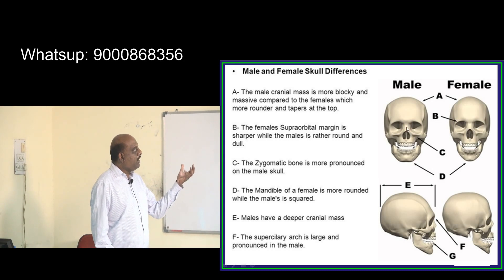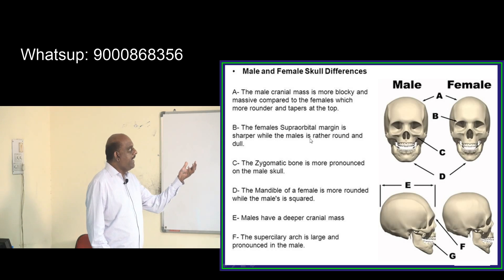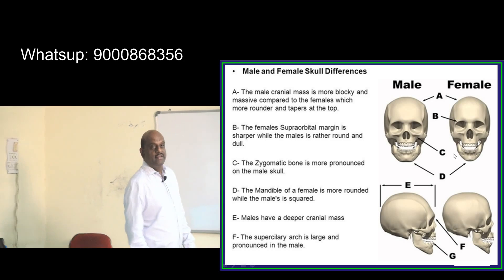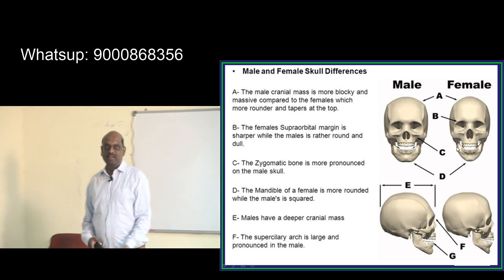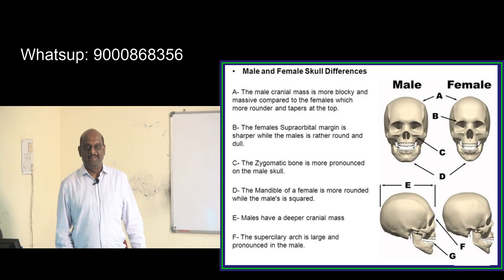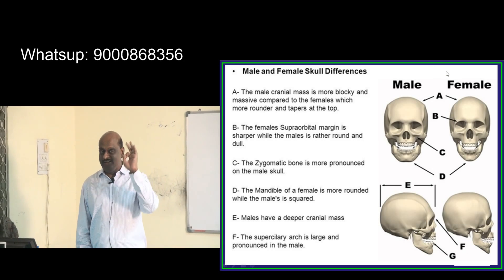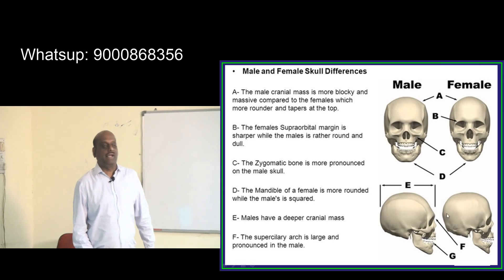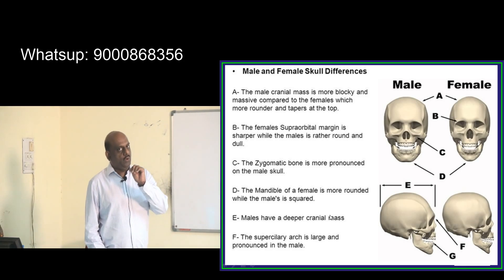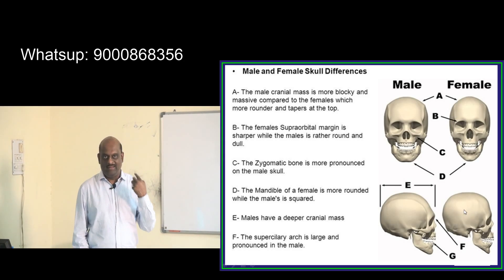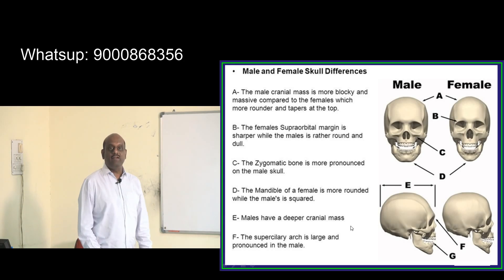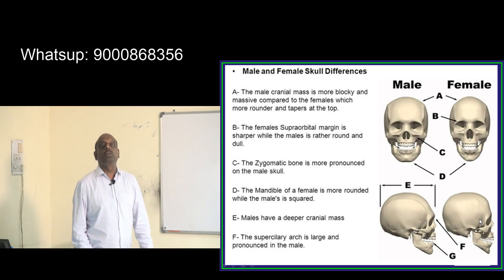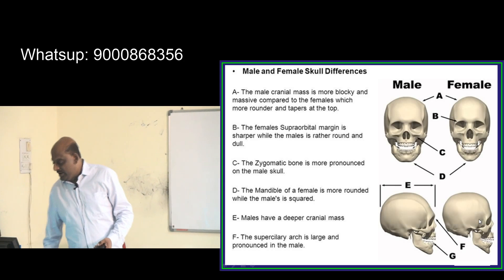The female's supraorbital margin is sharper, while the male's is rather round and dull. The zygomatic bone is more pronounced in the male skull. The mandible of the female is more rounded whereas the male's is more squared. Males have a deeper cranial mass and the superciliary arch is large and more pronounced in males.